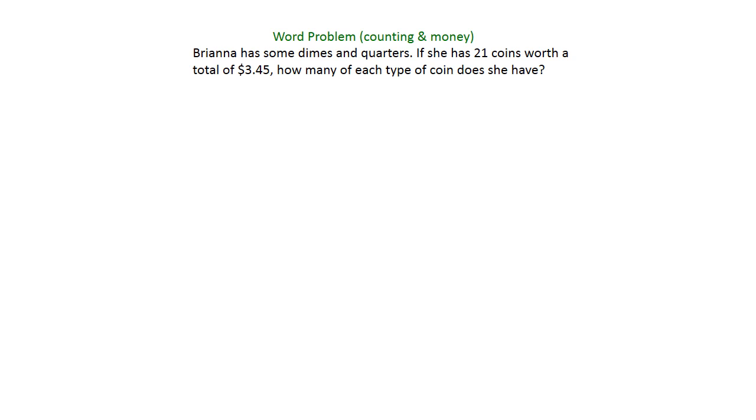You're always looking at the question to see what you're going to set your variables up as, and it's asking how many of each type of coin. We want to find the number of each type of coin, so we're going to say that dimes is D and quarters is Q, just to set that up so we know what our unknowns are.